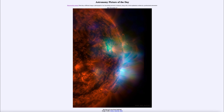Magnetic fields themselves are not visible — a magnetic field is completely invisible unless something is there to highlight it. We can use iron filings on Earth to see the magnetic field of a bar magnet, and we can also see the magnetic field highlighted in the plasma — the charged particles from the sun — that follow along those magnetic field lines, allowing us to see field lines that would otherwise be invisible.